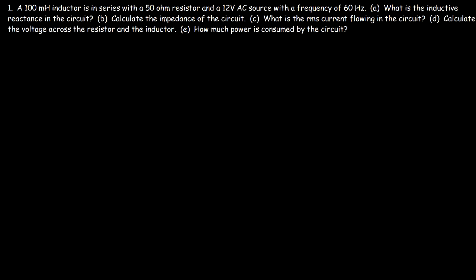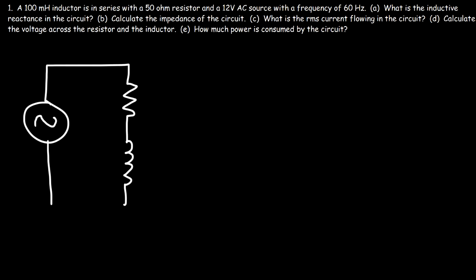Let's start with this problem: a 100 millihenry inductor is in series with a 50 ohm resistor and a 12 volt AC source with a frequency of 60 Hertz. Let's draw the circuit — we have the AC signal, the resistor, and the inductor. We have a 12 volt signal at 60 Hertz, a 50 ohm resistor, and a 100 millihenry inductor. Let's start by calculating the inductive reactance.